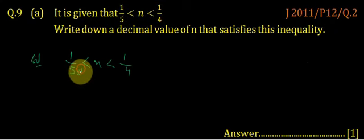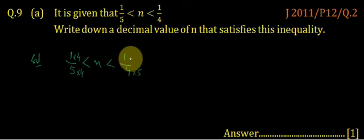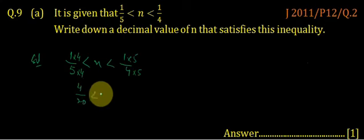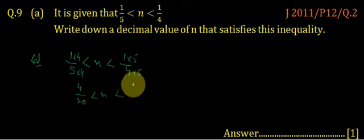We must first multiply by 4. Multiply the first by 4 and the last by 5 to get a common denominator of 20. So it becomes 4 upon 20 and n and 5 upon 20.